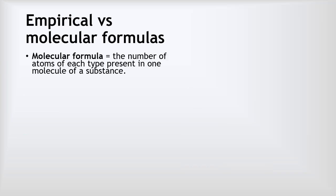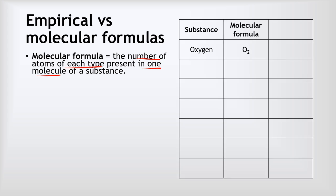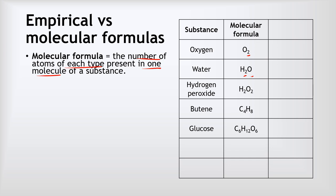A molecular formula tells us the number of atoms of each type present in one molecule of a substance. You've met lots of molecular formulas before, or you just might not have known they were called molecular formulas. For example, oxygen is O2, which means each oxygen molecule is made of two oxygen atoms. Water is H2O — two hydrogens and one oxygen. Hydrogen peroxide is H2O2, butene is C4H8, glucose is C6H12O6, and so on. These all tell us the number of atoms of each type that make up one single molecule.